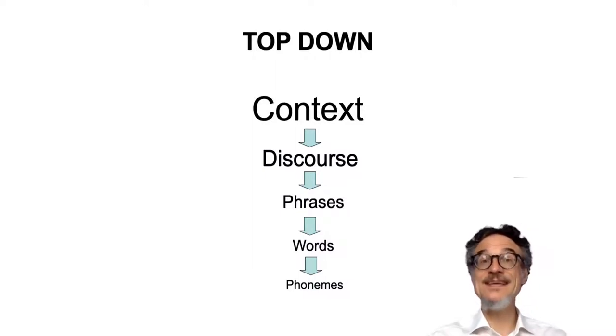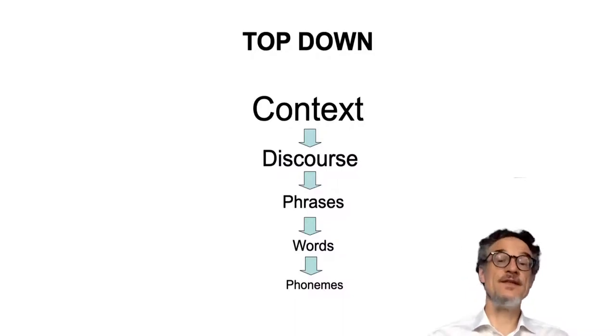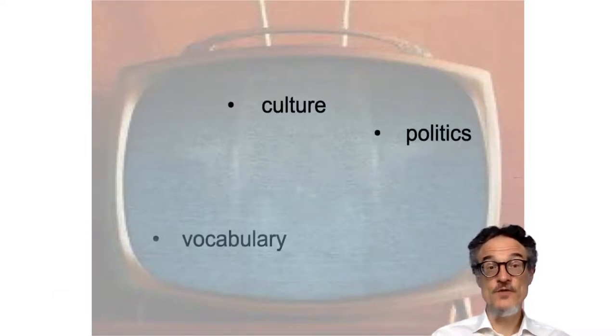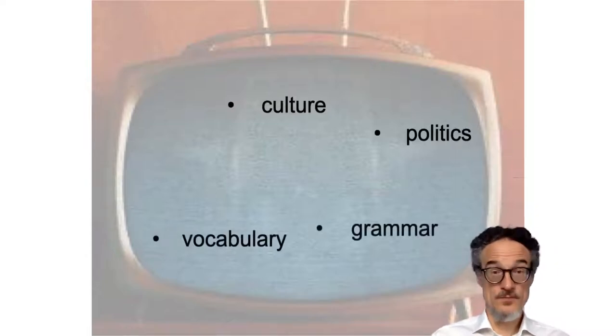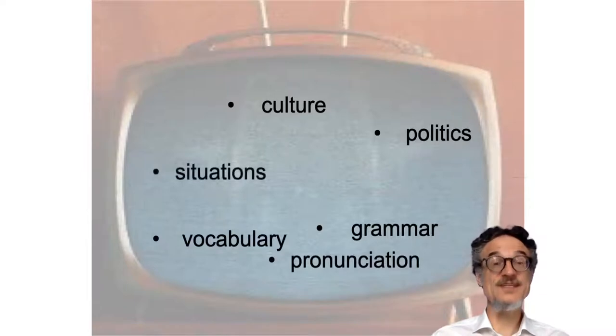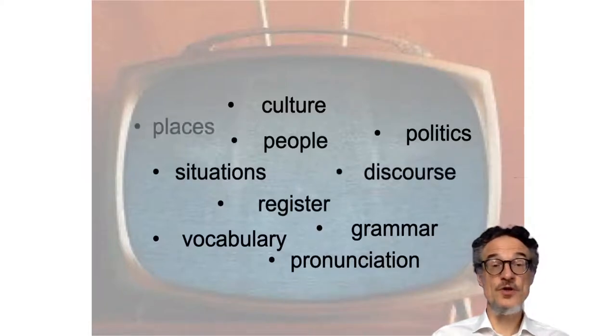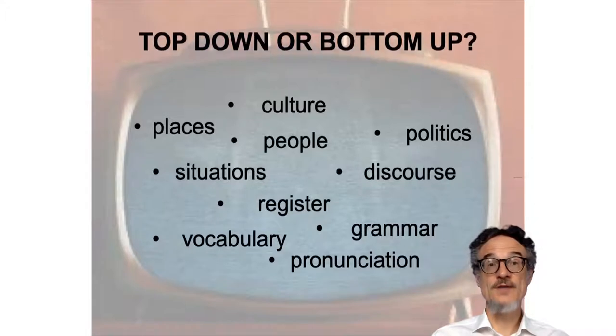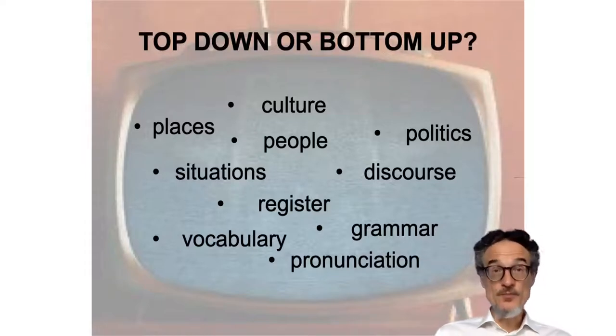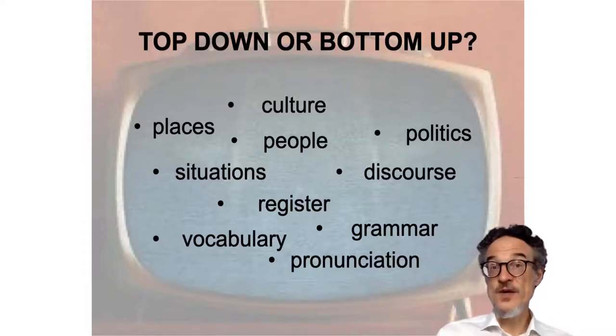Top-down listening is very easy in our first language. It's much more difficult in a second language. So when we're watching a movie scene there's a lot going on — culture, politics maybe, vocabulary, grammar, pronunciation, the way people speak, the situations, the people, their relationships, register, the kind of language people use, and discourse in different places. Some of these require top-down processing, some require bottom-up processing, but most of them we need top-down processing.